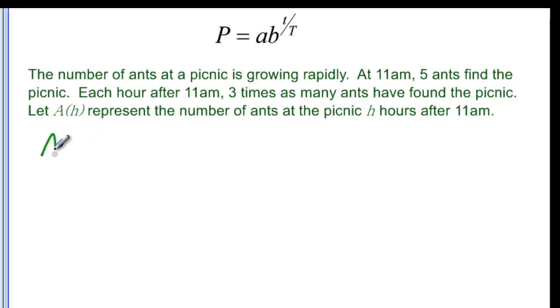So let's see what we have. A of h is going to be the number of ants. That's our population. And the a in this case, remember that's your original amount, they told us that five ants had started there at 11 a.m., so we have five ants as our a. And the factor that we have going here is that each hour after 11 a.m., three times as many ants have found the picnic. So b is going to be three.